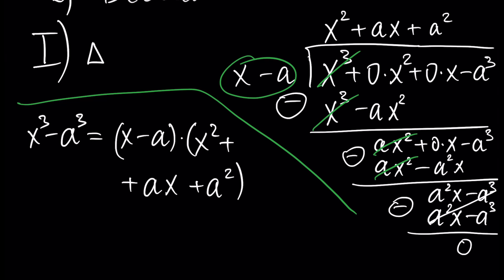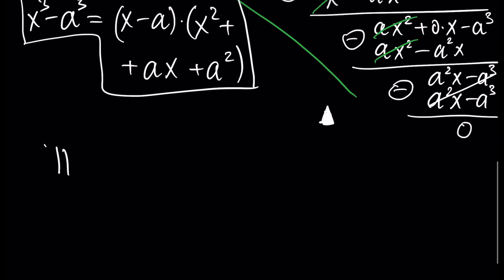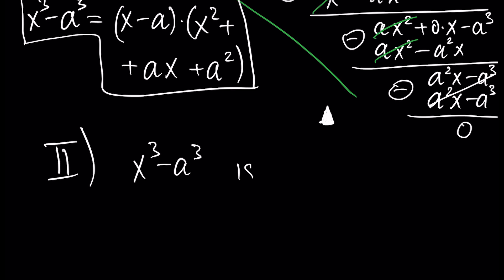We have our result. This formula is very important in algebra. That was the first method. Using the second method we can also prove that x cubed minus a cubed is divisible by x minus a, this time using the theorem of Bezout.